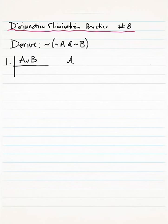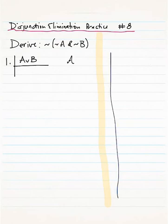Now let's begin by planning our strategy here on the right-hand side. Let's notice that we have only one primary assumption A or B, and what we're trying to derive is the negation of a sentence.